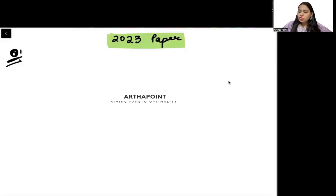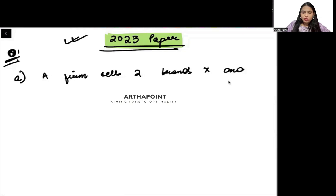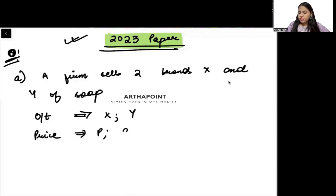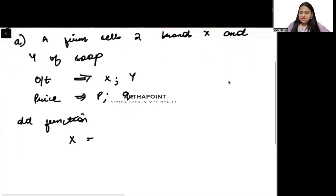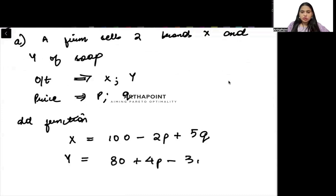Hello beta, in today's session we are going to take question number 1 of intermediate MME paper 2023. The question says suppose a firm sells two brands X and Y of a soap. You are given that the output of good X is X units, of good Y is Y units, and the price of good X is P and price of good Y is Q. The demand functions are given: demand function of good X is X equals 100 minus 2P plus 5Q, and demand function of good Y is 80 plus 4P minus 3Q.